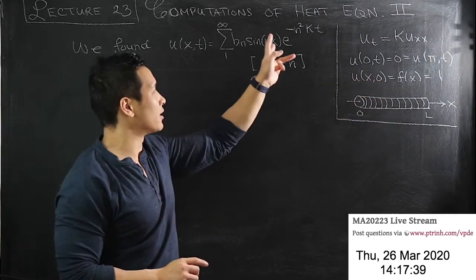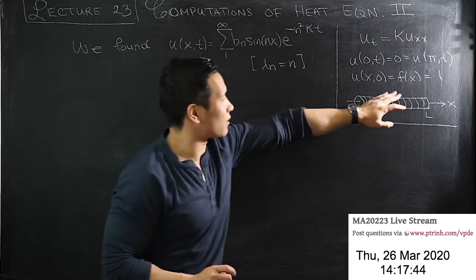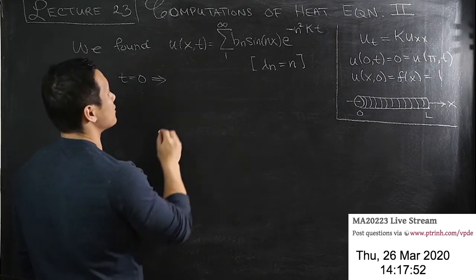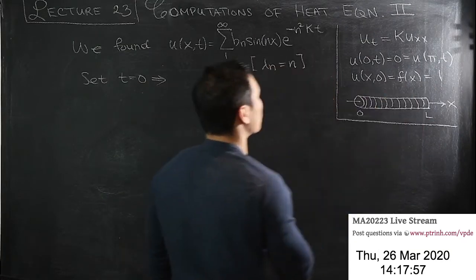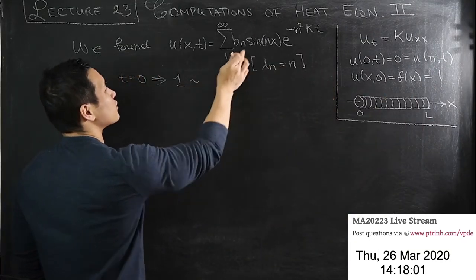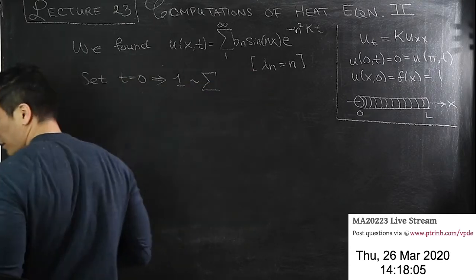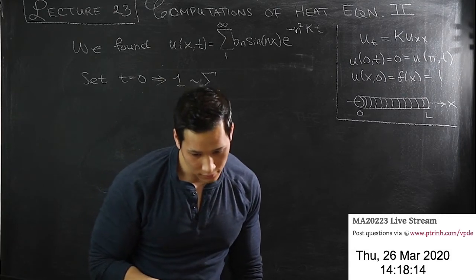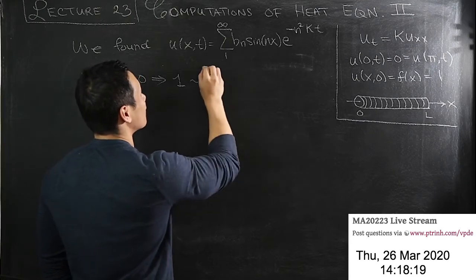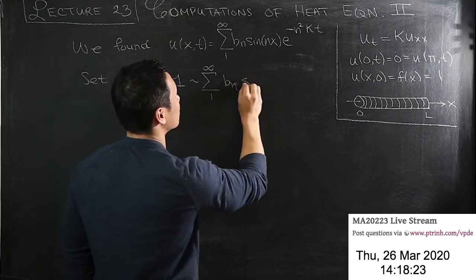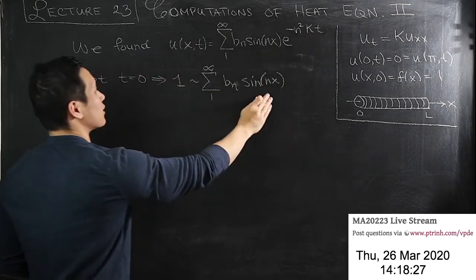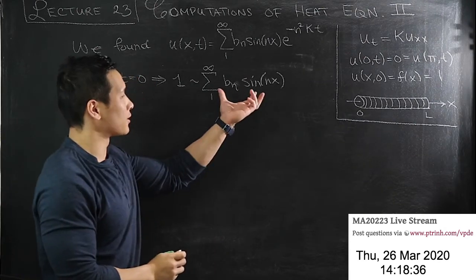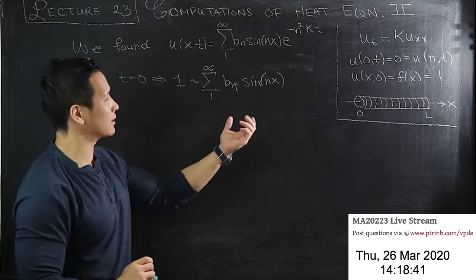Now we need to set t equal to 0 to satisfy the initial condition, finding the b_n's such that the condition is satisfied. Setting t equal to 0, f(x) equals 1, and we need the coefficients b_n chosen so that the sine series equals 1 on the domain. This is a Fourier sine series, and there's a trick to doing this problem which I'll go over again more clearly.